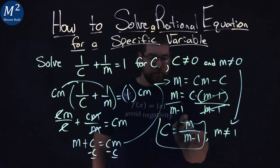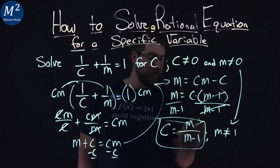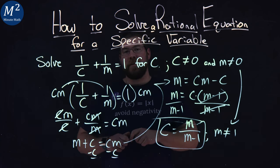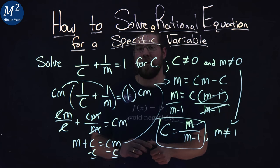But either way, our simplified final answer solved here - cross off that m, it's all right. I hope you'll forgive me, I think you will. Our final answer here is c = m/(m - 1).